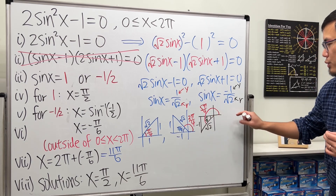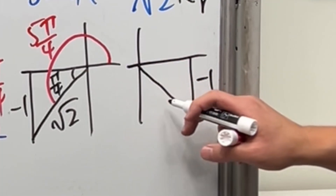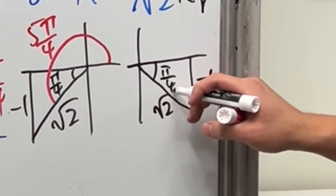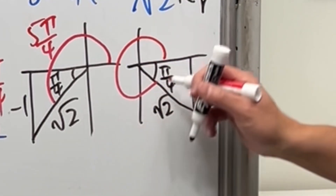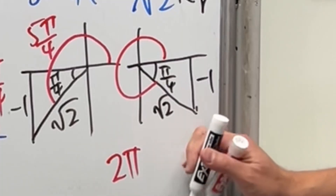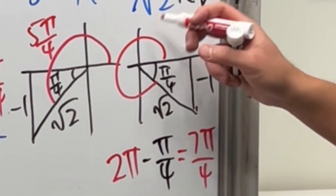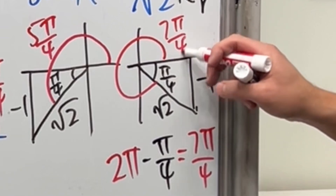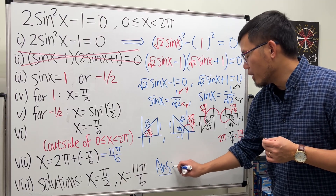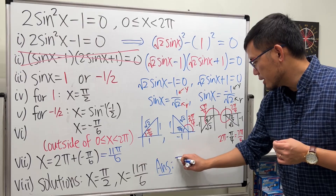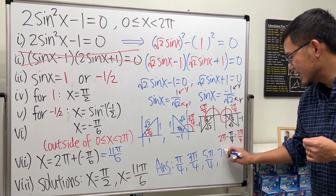For the final answer, we use the fourth quadrant triangle: y equals negative 1, r equals square root of 2, and the reference angle is π over 4. The full angle is 2π minus π over 4, which is 8π over 4 minus π over 4, giving 7π over 4. So the four answers are π over 4, 3π over 4, 5π over 4, and 7π over 4.